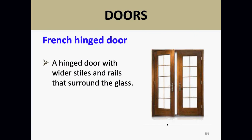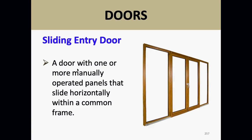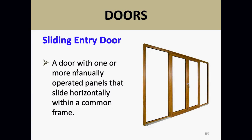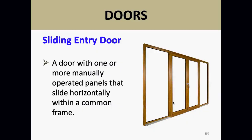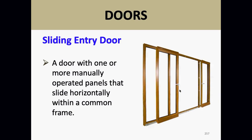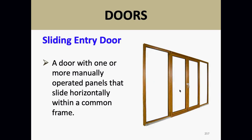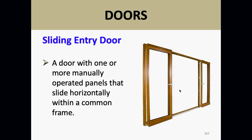Sliding entry doors have one or more manually operated panels that slide horizontally within a common frame — your patio doors are like this. Many of them tip out so you can pull them out of their tracks. In high-end homes, you might have an entire wall of these doors that open up completely, bringing outside living inside.